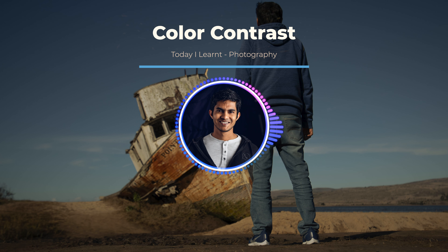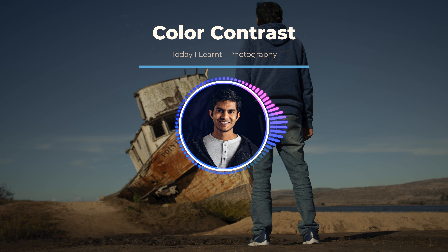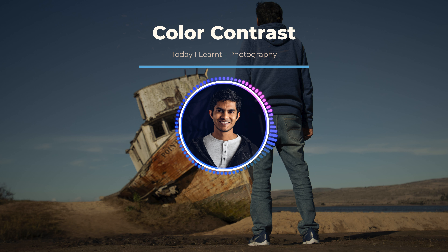Now we're talking about color contrast. In the last video we talked about tonal contrast and contrast in general. Contrast is basically difference in your image — any kind of difference. It could be difference in tones, which would be tonal contrast, or it could be difference in colors, which would be color contrast. Color contrast is basically when you have different types of colors in your image. If you have the sky and the ocean and both look blue, you don't have a lot of color contrast. But if you have a desert in the foreground and the blue sky on top, that's a lot of color difference — the desert is almost orange while the sky is completely blue.